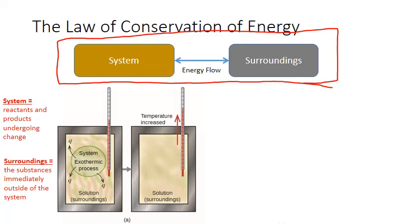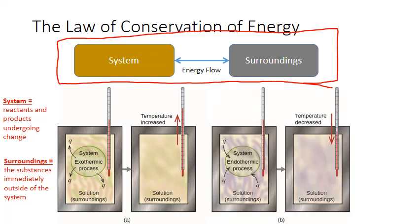If we were to put an exothermic aqueous reaction into a calorimeter and measure the temperature changes as the reactants and products mix, we'd actually see the temperature increase. This is because heat is being released by those reactants and products, and the water — the solvent in that calorimeter — absorbs the heat. What we see is the temperature increase for the water, for the surroundings. In the same way, if we were to put an endothermic reaction into a calorimeter and measure the temperature change, we'd actually see the temperature drop, because the reactants and products absorb energy from the water they are dissolved in, and so the temperature of the water drops.